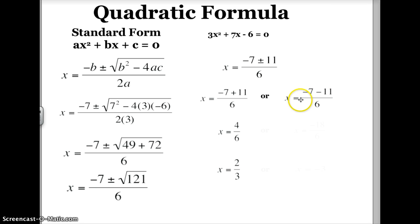So I have x equals -7 minus 11, divided by 6. Well, -7 minus 11 is -18. So I have x equals -18 divided by 6. -18 divided by 6 is -3. So I have x equals -3.